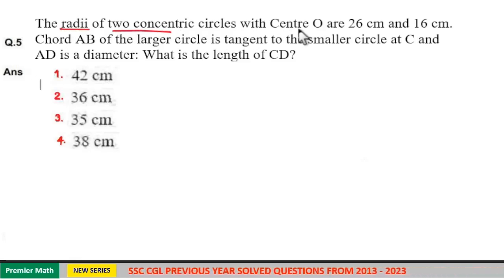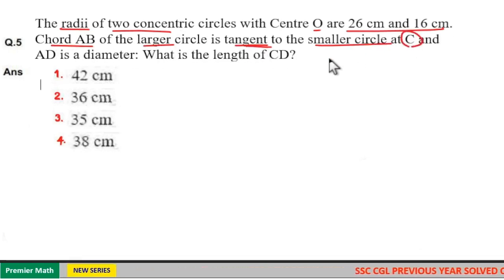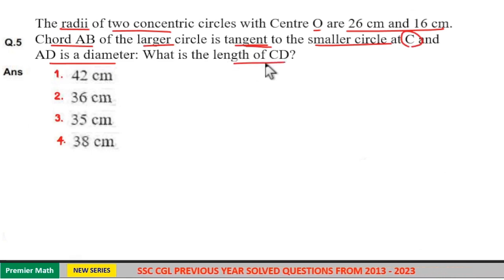The radii of two concentric circles with centre O are 26 centimeters and 16 centimeters. Chord AB of the larger circle is tangent to the smaller circle at C, and AD is a diameter. What is the length of CD?